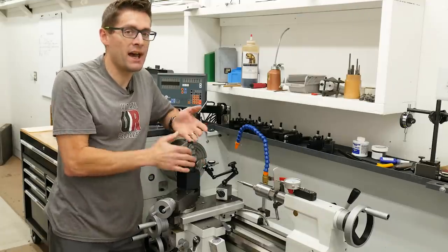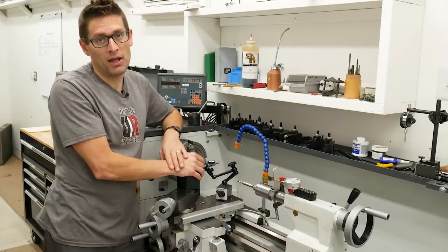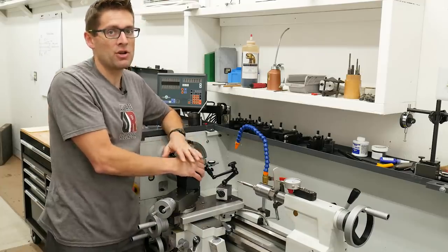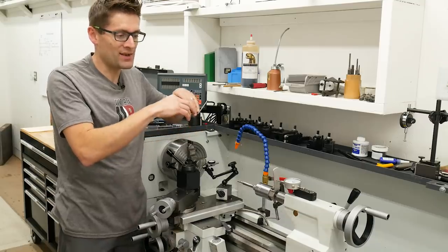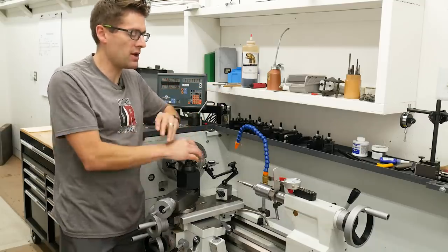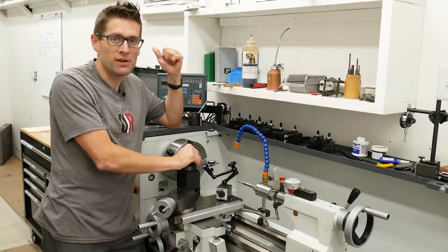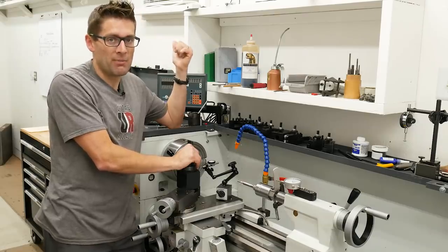So with the chamber cut, it was time to polish the chamber. And you don't want to over polish the chamber. Your brass needs some grip, otherwise it will result in excessive bolt thrust and it will elongate your brass. So I just take a little bit of 320 grit wet and dry paper. I put it on a wood dowel and put some oil on it, some cutting oil, and just give it a light polish.